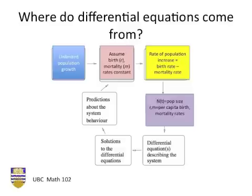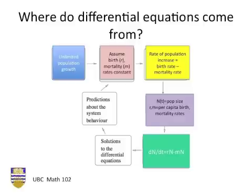Let us define n of t to be population size, and r and m respectively as the per capita birth and mortality rates. The balance equation in the yellow box can now be converted to a differential equation, dn by dt equals rn minus mn.